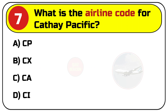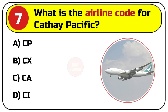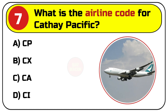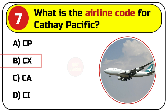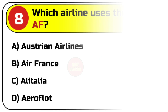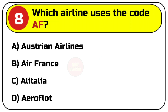Question number seven: what is the airline code for Cathay Pacific? Options are A. CP, B. CX, C. CA, D. CI. Correct answer is B. CX.